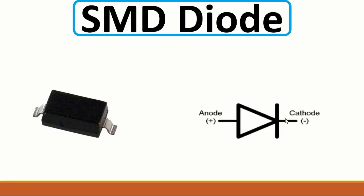To use a regular diode as a protection component, you should connect the cathode to the high-power rail of the circuit and the anode to ground — cathode to the high rail and anode to ground.